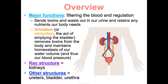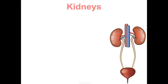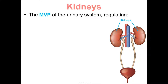We'll see that in our urinalysis lab activity when we analyze the composition of some urine samples. The kidneys are the MVP of the urinary system. They're in your dorsal body wall, on either side of your spine in the superior lumbar cavity, somewhat protected by the lower part of your rib cage.